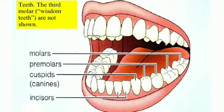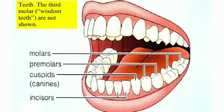Teeth is also an important organ. Teeth help in chewing the food and making it into particulate form. The food mixes with saliva and is easier to swallow. There are 4 types of teeth: incisors, canines, premolars and molars. Each type has a specific function. Calcium salts make the enamel of each tooth. Saliva has an enzyme called ptyalin or salivary amylase, which converts starch into maltose. Each tooth is covered by a hard substance called enamel, made up of calcium salts.